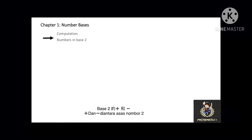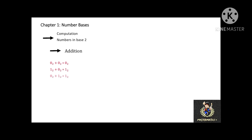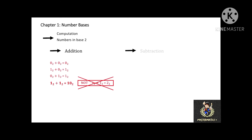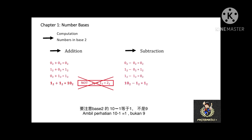The last topic of this chapter is computation in base 2. For addition in base 2: 0 plus 0 equals 0; 1 plus 0 equals 1; 0 plus 1 equals 1; and 1 plus 1 equals 10. Take note. For subtraction in base 2: 0 minus 0 equals 0; 1 minus 0 equals 1; 1 minus 1 equals 0; and 10 minus 1 equals 1. Take note — in base 2, 10 minus 1 equals 1, not 9.